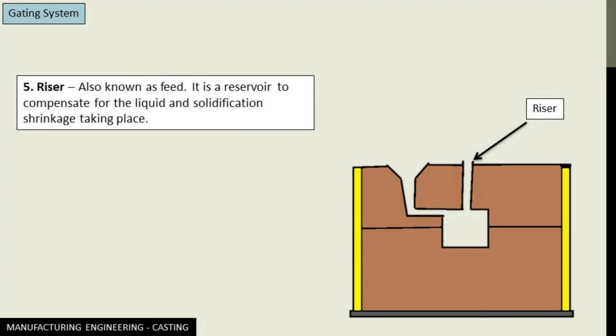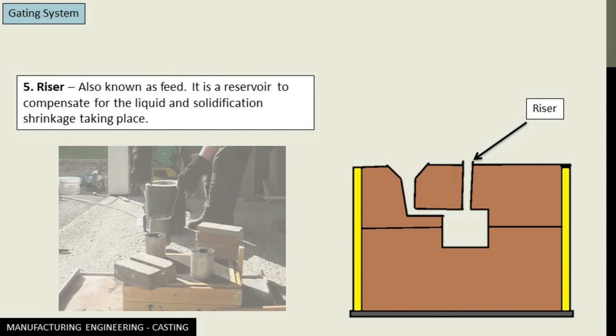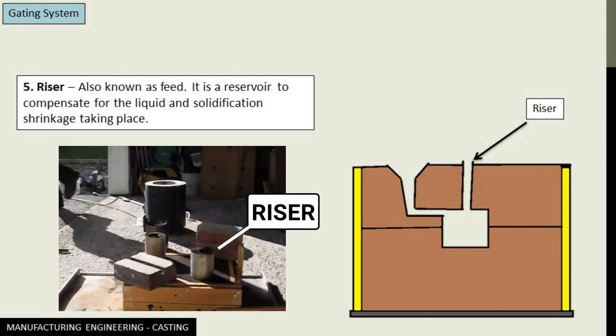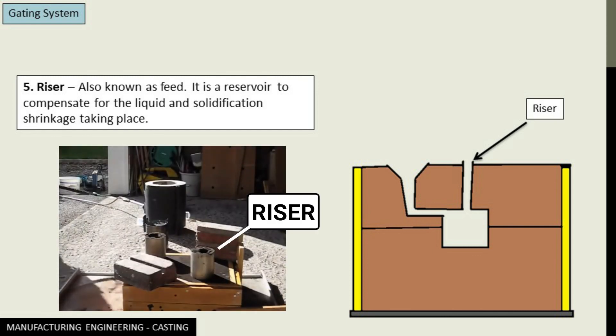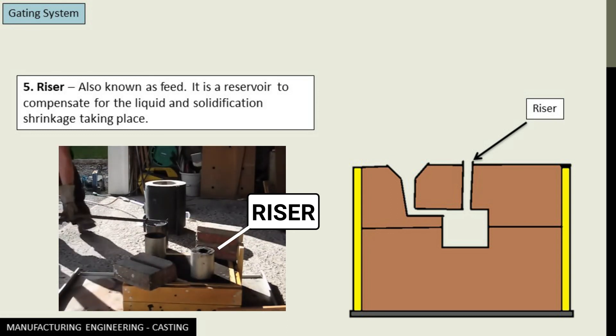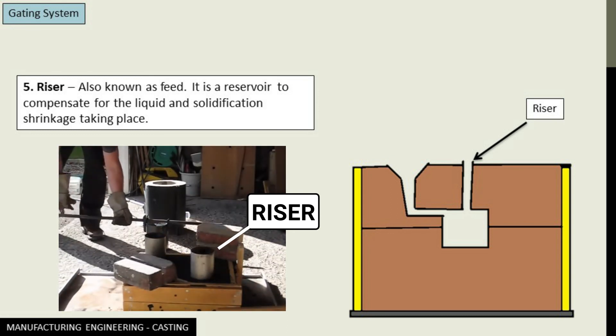Next comes the riser, a very important casting element. It is also known as feed, and as the name suggests, it feeds the cavity with molten metal.